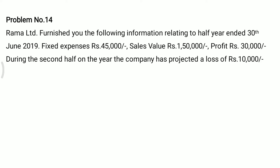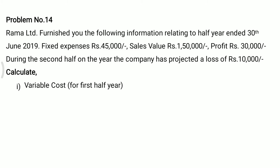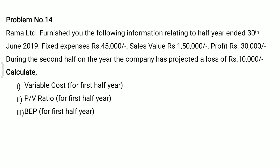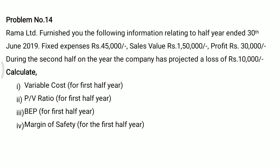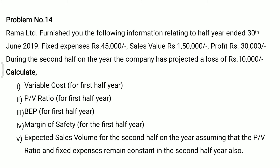Profit is rupees 30,000. During the second half of the year, the company has projected a loss of rupees 10,000. Calculate: first, variable cost for the first half year; second, PV ratio for the first half year; third, BEP for the first half year; fourth, margin of safety for the first half year; and lastly, expected sales volume for the second half of the year, assuming that the PV ratio and fixed expenses remain constant in the second half year also.